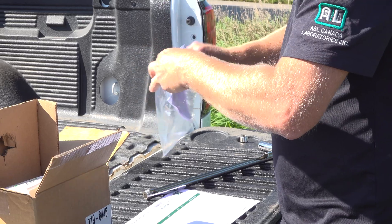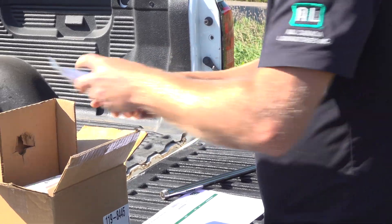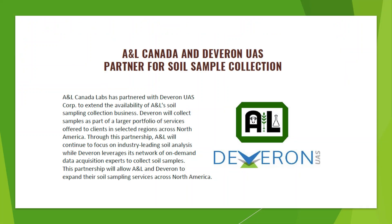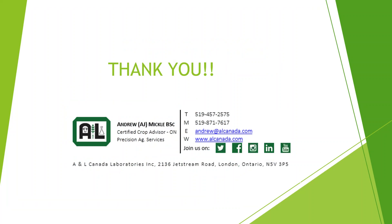If you have questions regarding the submission or shipping process, please call the lab and someone will be able to advise you. Once the samples arrive at the lab, the turnaround time will depend on the analysis you have requested. Standard soil fertility tests and nitrates are typically ready in three business days, pesticides and heavy metals five to seven days, soil health and soybean cyst nematode in seven days, a full nematode scan in 10 days, and soil disease in three to five days. If you're unable to collect your own samples, A&L has partnered with Deveron UAS for soil collection across North America — call us today and see if there are boots on the ground in your area. Thanks for taking the time to tune in. If you have any questions regarding the sampling process, shipment of samples, analysis costs, or interpretation of results, we have staff on hand that can assist you.